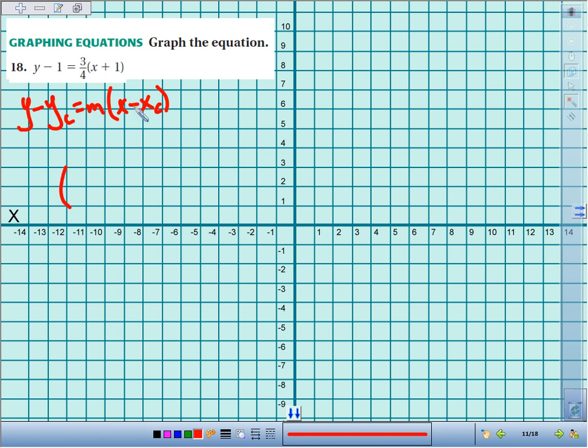The opposite of what is positive 1? So the x coordinate is actually negative 1. Here, y minus the y coordinate, it follows right there. The y coordinate is 1, so begin by plotting the point negative 1, 1.